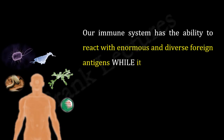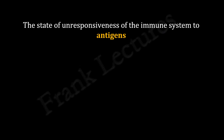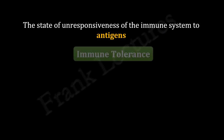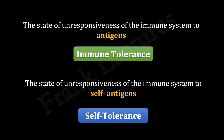Our immune system has the ability to react with enormous and diverse foreign antigens while not reacting or mounting immune responses to self-antigens. This means our immune system tolerates the self-antigens. The state of unresponsiveness of the immune system to a particular antigen is known as immune or immunological tolerance — meaning the immune system does not mount an immune response when it encounters that antigen. The state of unresponsiveness to self-antigens specifically is known as self-tolerance.